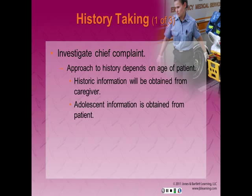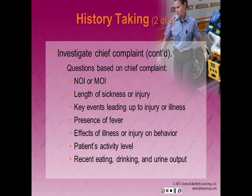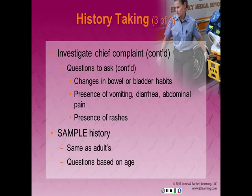Take your history and investigate your chief complaint. Your approach will depend on the age of the patient. Historic information for an infant, toddler, or school-age child must be obtained from the parent or caregiver. With adolescents, most information comes from the patient directly. Remember that sexual activity, possibilities of pregnancy, and drug or alcohol use should be obtained in private without caregivers present. When interviewing about the chief complaint, obtain: the nature of the illness or mechanism of injury, how long the patient has been sick or injured, key events leading to illness, presence of fever, effects on behavior and activity level, any recent eating, drinking, urine output, changes in bowel or bladder habits, vomiting, diarrhea or abdominal pain, and any presence of rash.